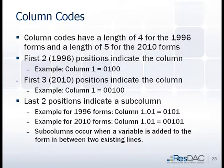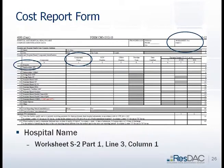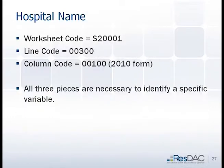Column codes are a length of four using the 96 forms and a length of five for 2010. It follows the same scheme. Using the 2010 example, column one would look like 00100. If there are any subcolumns — where a column had to be inserted between two others — it would look like 1.01, coded as 00101. So for our example: the worksheet code would be S20001, the line for finding hospital name would be 00300, and the column code would be 00100. You need all three pieces to identify that variable as the hospital name.